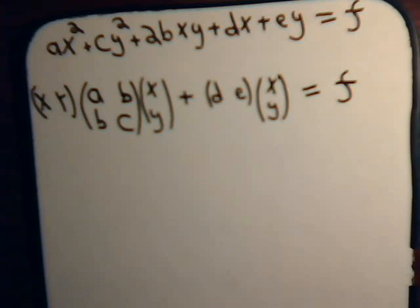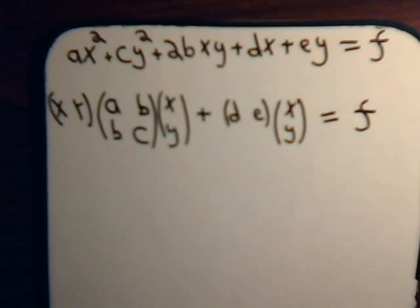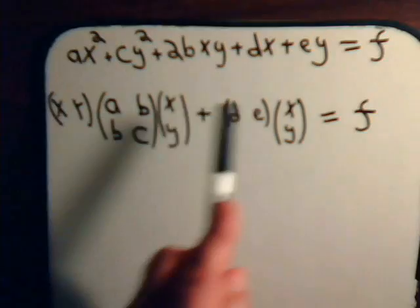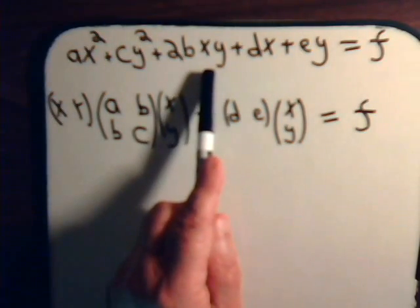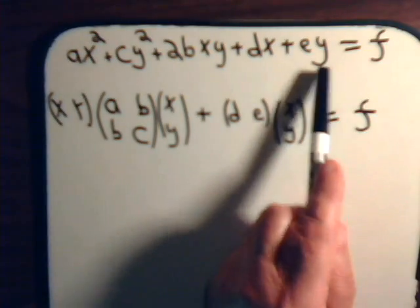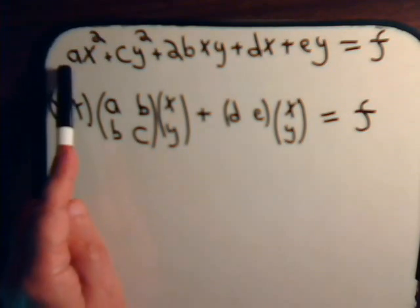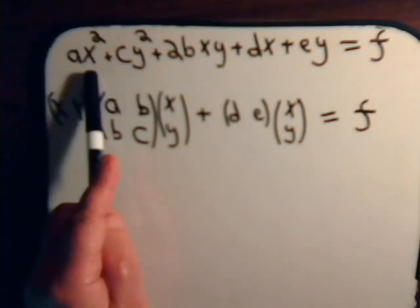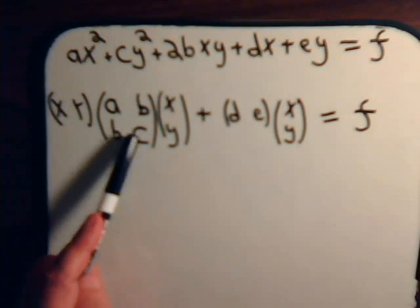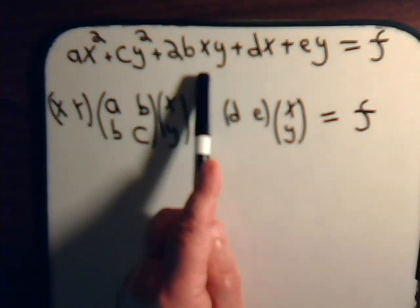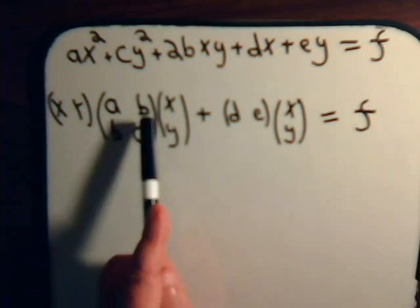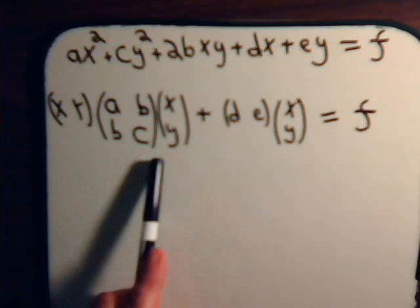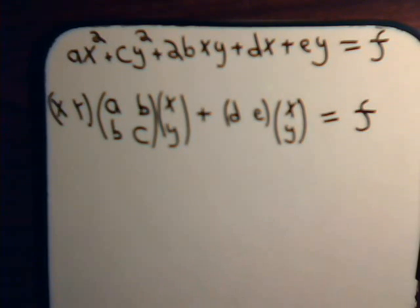The general quadratic expression in two dimensions in the xy plane has an x squared term, a y squared term, an xy inner product term, an x term, and a y term. This part of the equation can be written in matrix form: the coefficients of x squared and y squared are the diagonal elements, and half the coefficient of the xy cross term gives the off-diagonal elements. This always produces a symmetrical matrix — take the transpose and you get the same matrix.